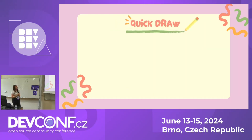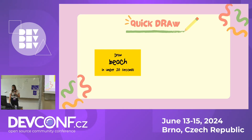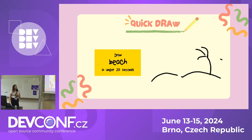Now let's look at Quick Draw. Your task is to paint something — some object or situation — in under 20 seconds. For example, a beach, and that's what I created. It also uses artificial intelligence: as you start drawing, it guesses — is it an arm? A building? A house? — and then eventually says 'I guess it's a beach.' This can be quite fun because you are drawing with a mouse.